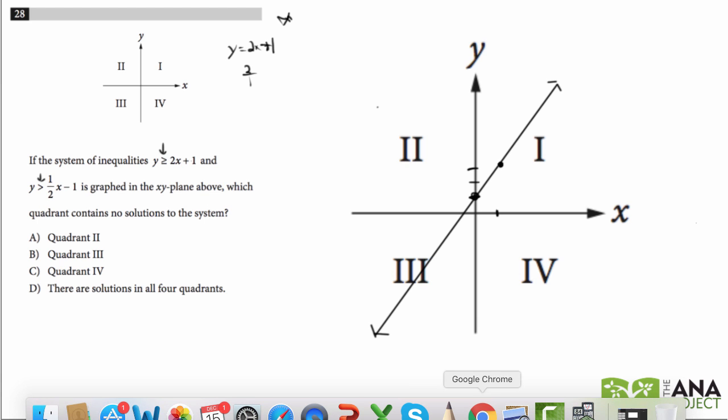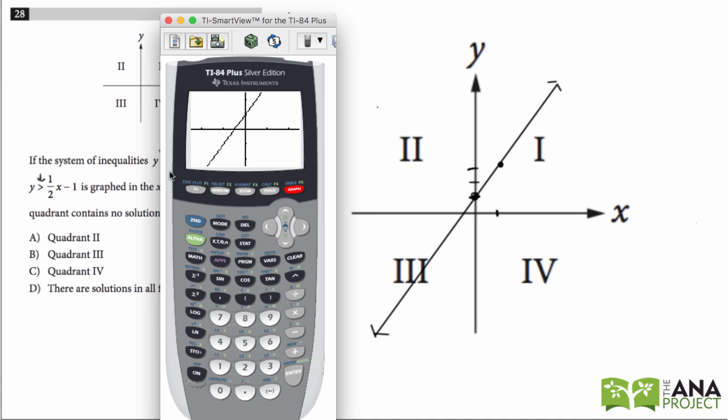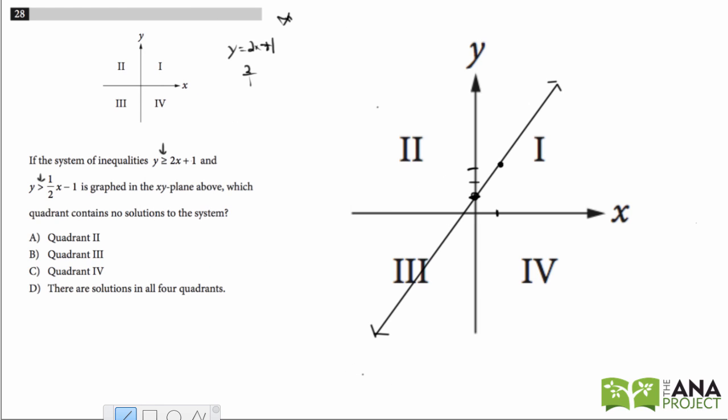Let's look at y is greater than 1 half x minus 1. So I'll go to down here, 0.5x minus 1. Let me graph it first just to show you by hand. Y intercept is negative 1. So I'm going to go down 1 and make a point. And then the slope is 1 half, which means up 1 over 2. So go up 1 over 1, 2. Then we will connect the dots.